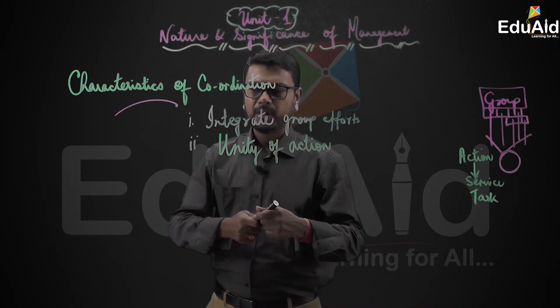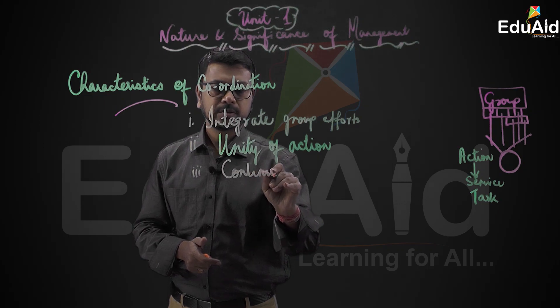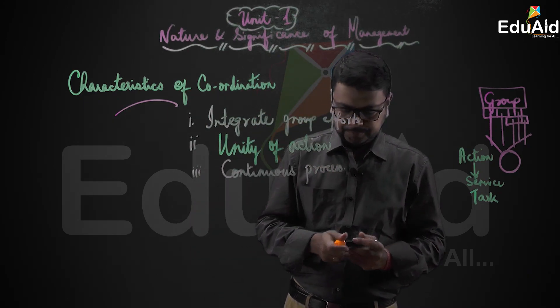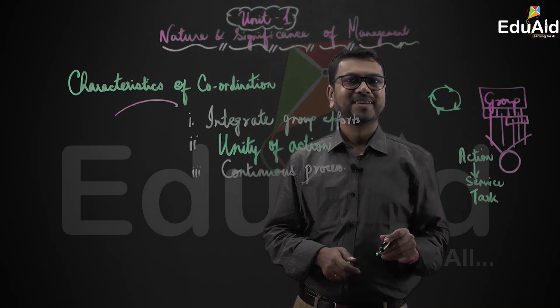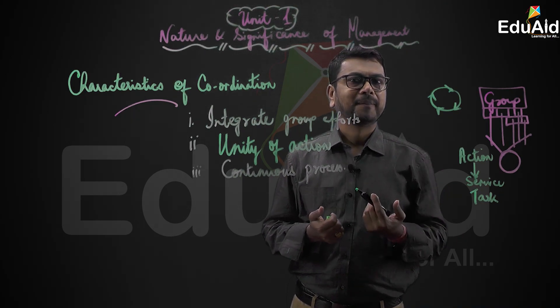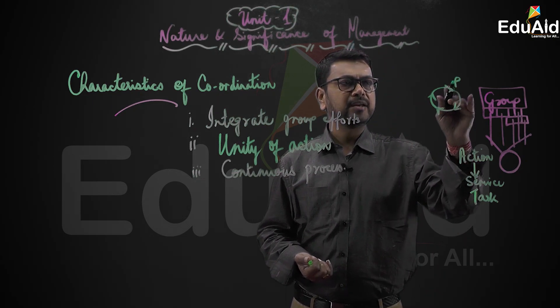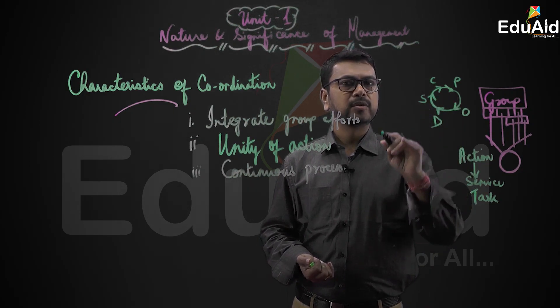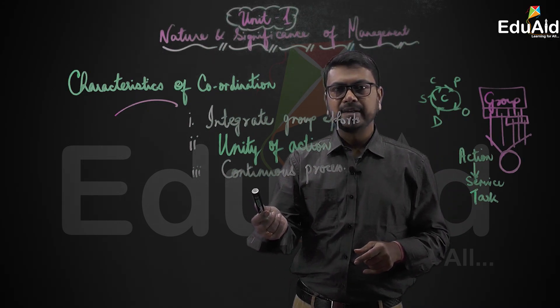Let us go to the third point. Continuous. Coordination is a continuous process. What do you mean by it? It's a never-ending process. It goes on and on. Because when coordination itself is not a function, please remember, it helps all the other functions to take place. So therefore, whether you are talking of planning, organizing, directing, staffing, or controlling, coordination is the central element which helps to bind together all the functions of management. And it is a continuous process.